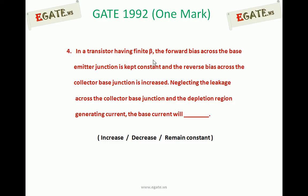In a transistor having finite beta, the forward bias across the base emitter junction is kept constant and the reverse bias across the collector base junction is increased. Neglecting the leakage across the collector base junction and the depletion region generating current, will the base current increase, decrease, or remain constant?